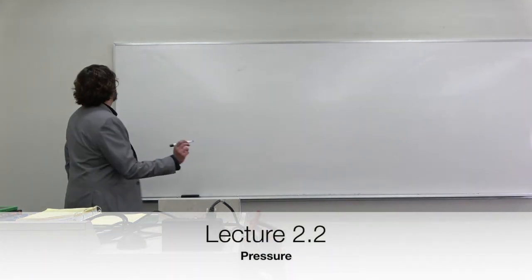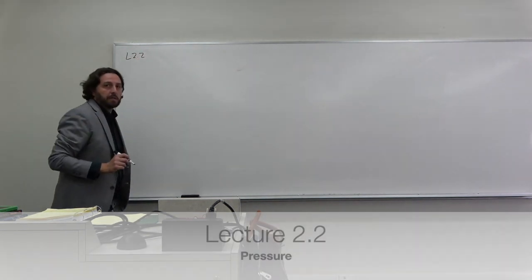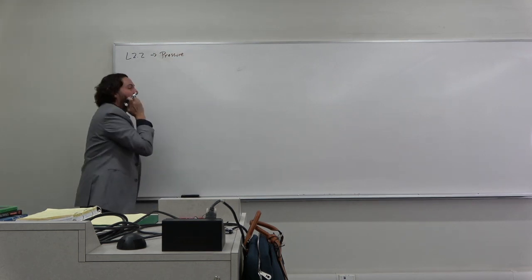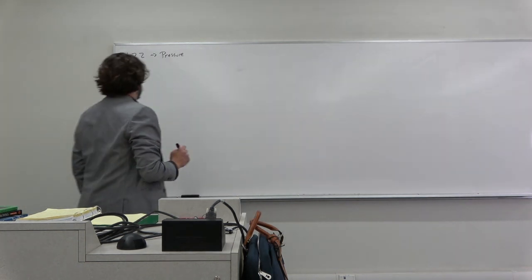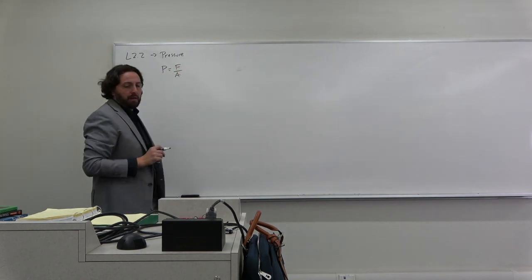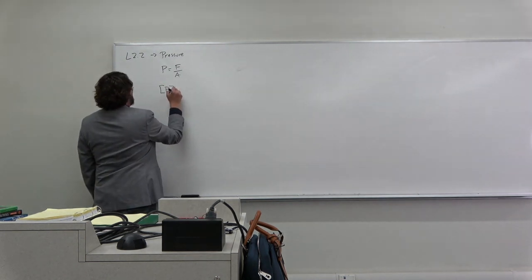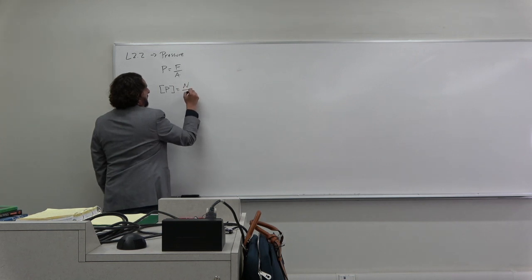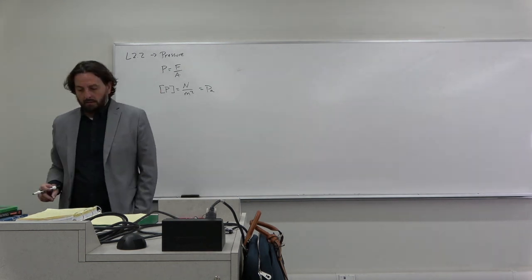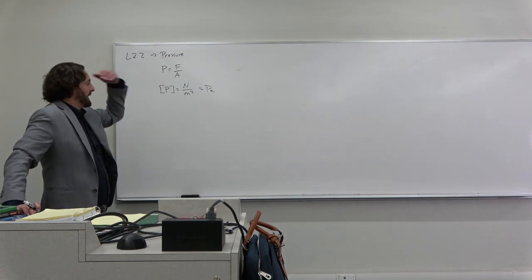Welcome back to lecture 2.2, where we're going to talk about pressure. We defined pressure last time — pressure in the system is force over area, force per unit area. The units of pressure are newtons per meter squared, which is called a Pascal. Pascal is the SI unit of pressure; Newton is the SI unit of force.